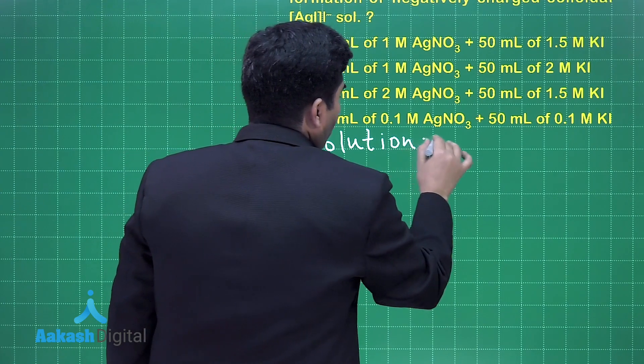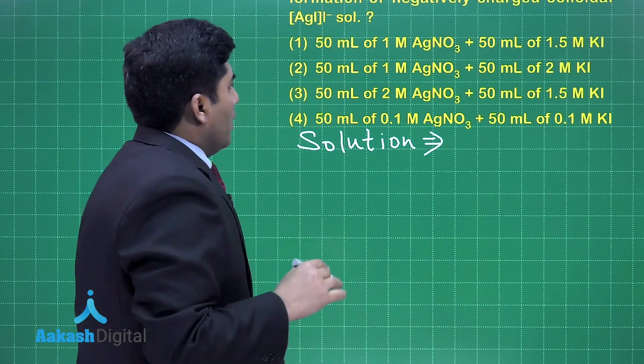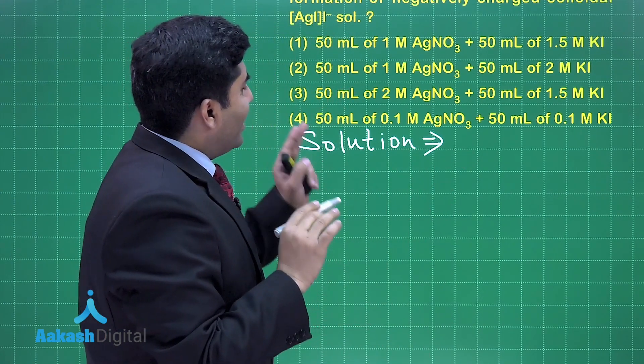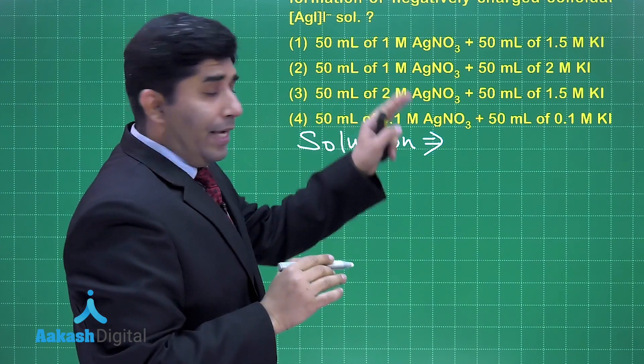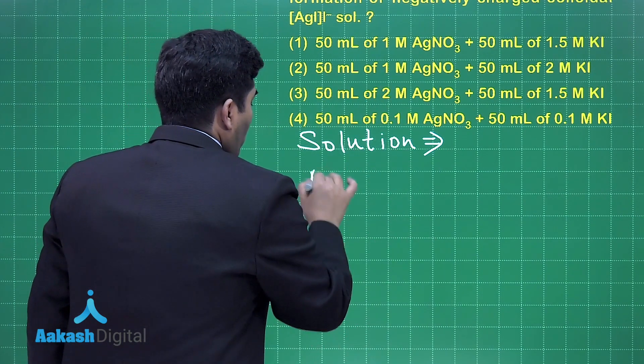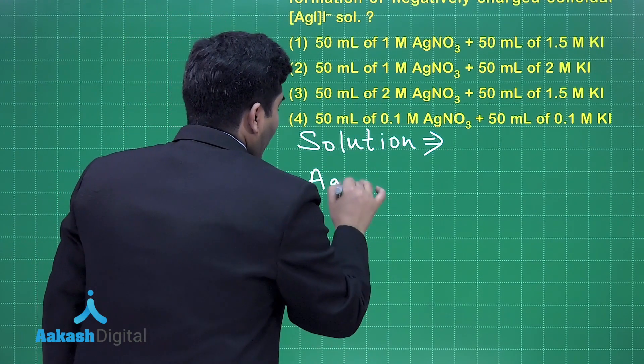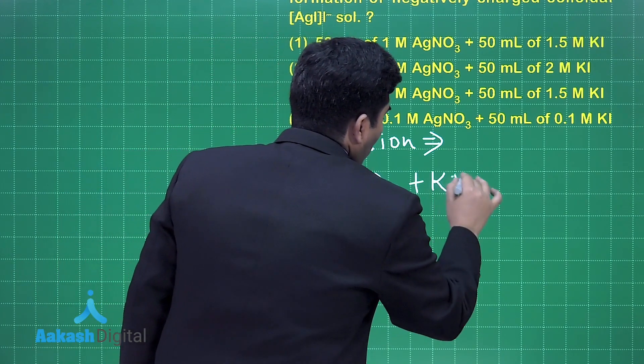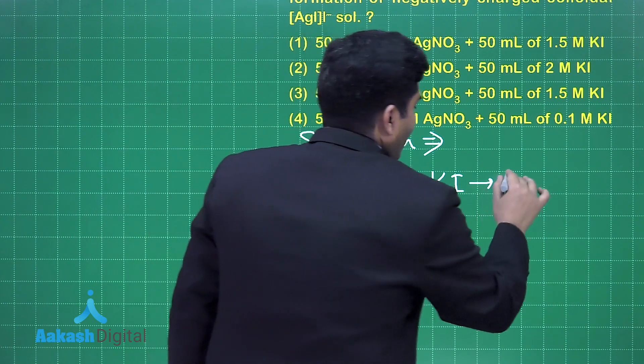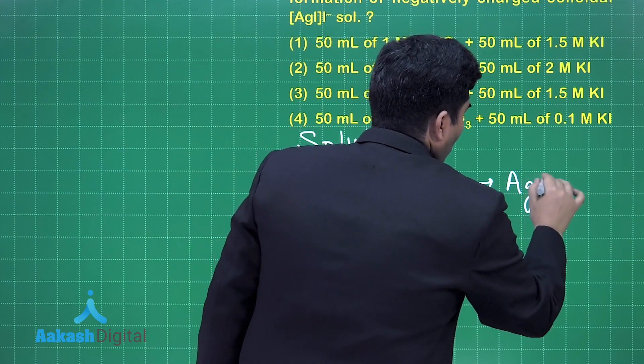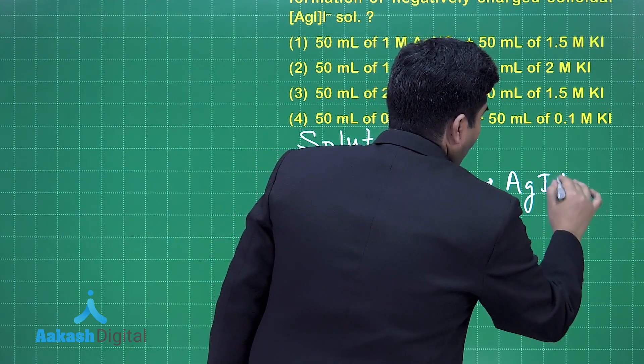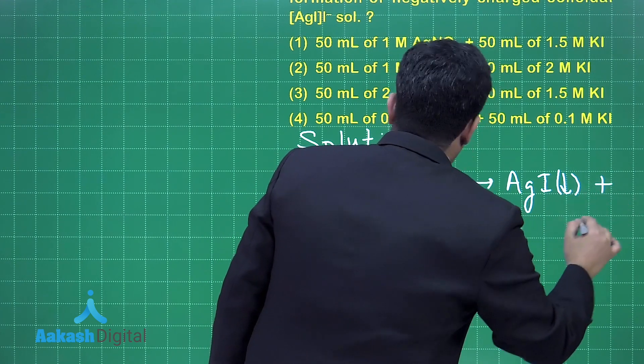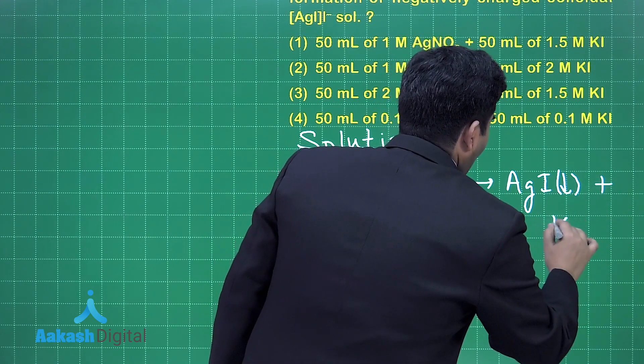The concept behind the question and the reactants given are AgNO₃ and KI. Writing the equation: AgNO₃ + KI will give us AgI which is a precipitate, plus it will give us KNO₃.